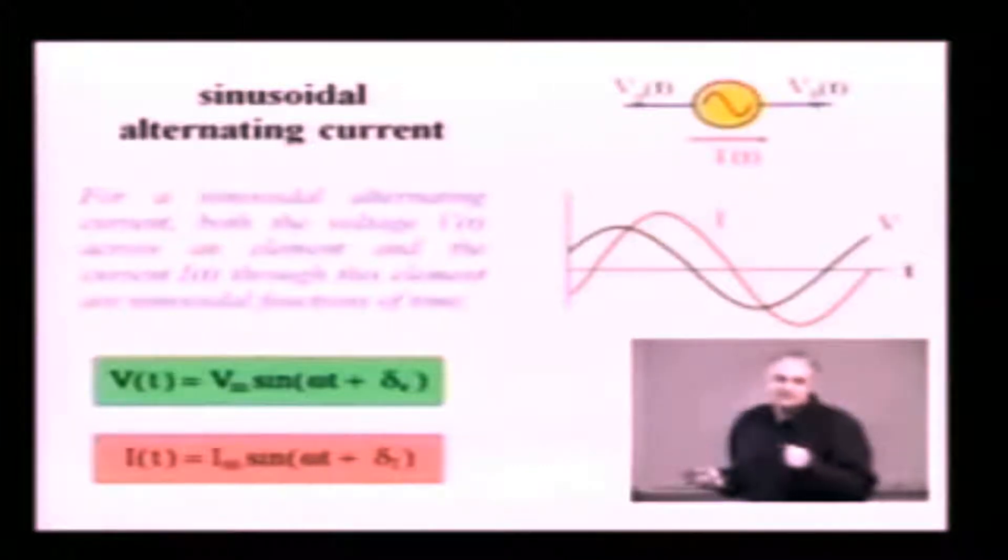Therefore also here, a sinusoidal alternating current, this is AC current, this is the flow of charged particles. If it is a sinusoidal flow of charged particles, voltages across elements and currents through those elements are going to be sinusoidal functions of time.